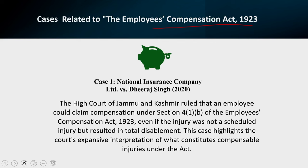On August 20, 2010, while driving the truck from Jammu to Jalandhar, Deerat Singh lost control of the vehicle, resulting in a collision with another truck. This accident caused significant injuries including fractures and other bodily harm. Deerat Singh filed a claim with the commissioner under the Employees' Compensation Act, claiming a monthly salary of Rs. 8,000 and an additional Rs. 2,000 as a trip allowance. The National Insurance Company contested the claim, disputing the existence of an employer-employee relationship between Deerat Singh and the truck owner, arguing the claim was filed in collusion.